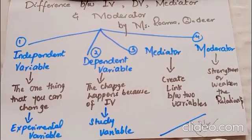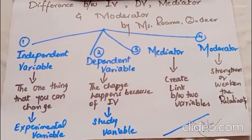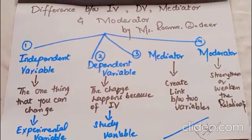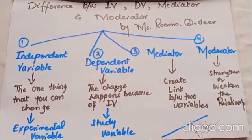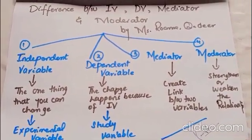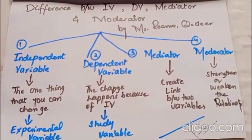IV and DV are now clear. The third one is the mediator. A mediator variable basically creates a link between them.